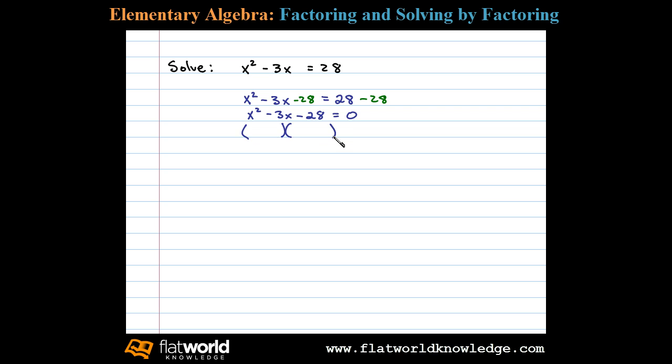In this case, x squared factors to x times x. The factors of 28 that add up to negative 3 are positive 4 and negative 7.